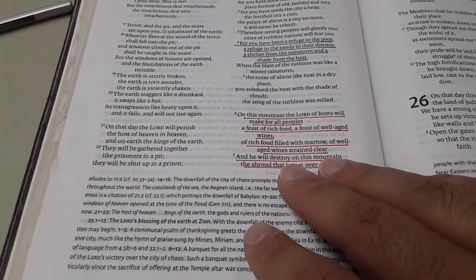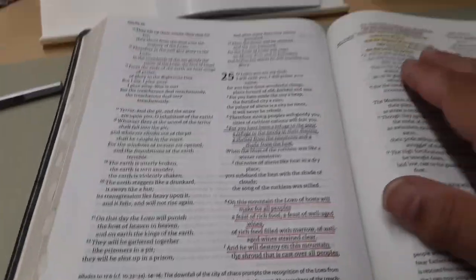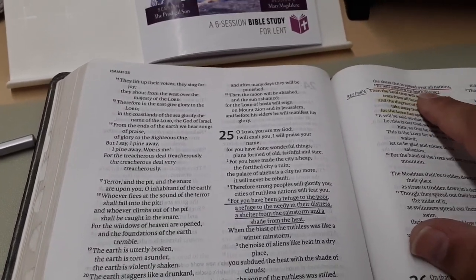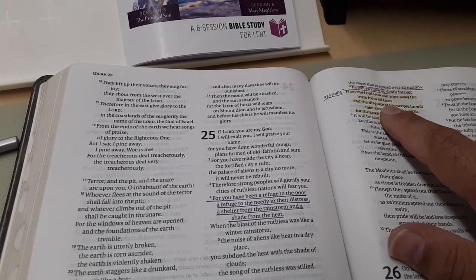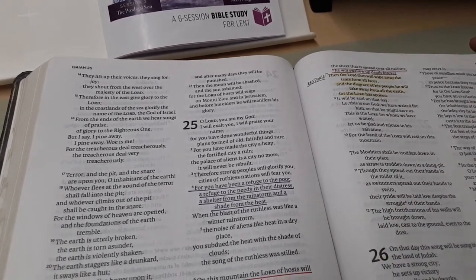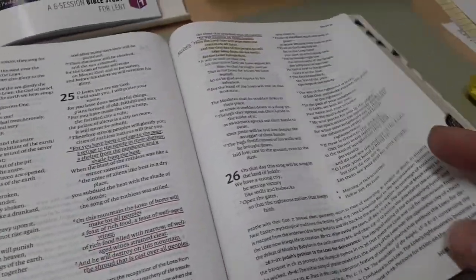A rich food filled with marrow of well-aged wines. It could have easily done this in purple because it is messianic. Then the Lord will wipe away the tears from all faces. I highlighted that. So that might've been an old highlighting before I had the pencil system in place.